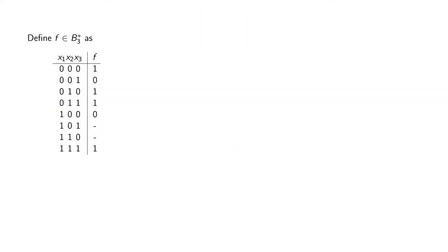So again, let's look at an example. We're going to use the same example as we have seen before, where f is a boolean function in the three-dimensional vector space taking either 0, 1, or don't care as an output. Since we want to find the min terms, we're going to look at the ones, because these will correspond to vertices in our boolean space.